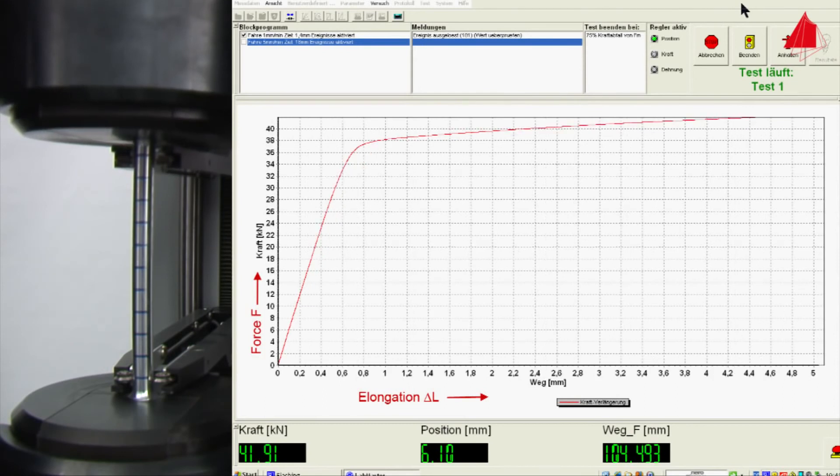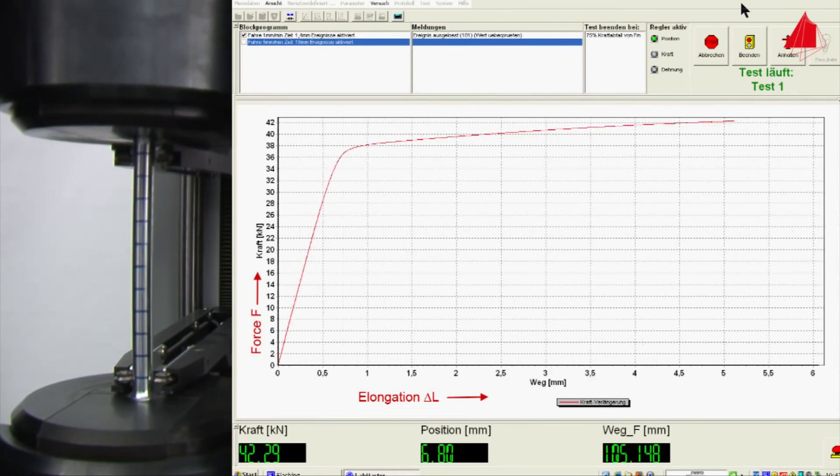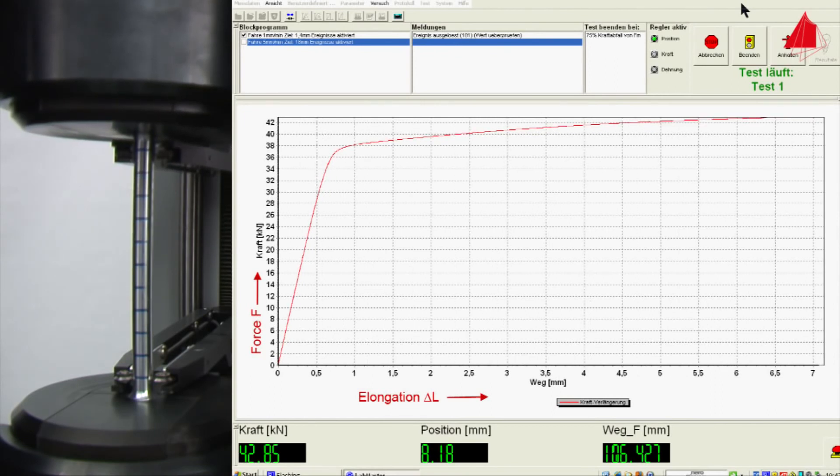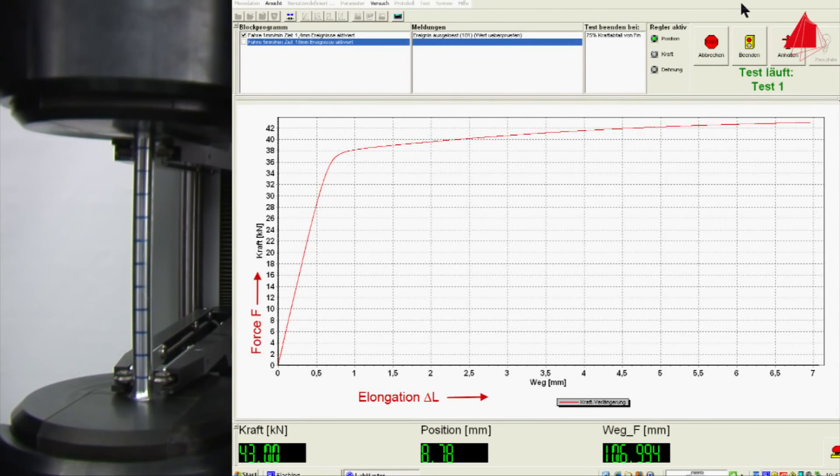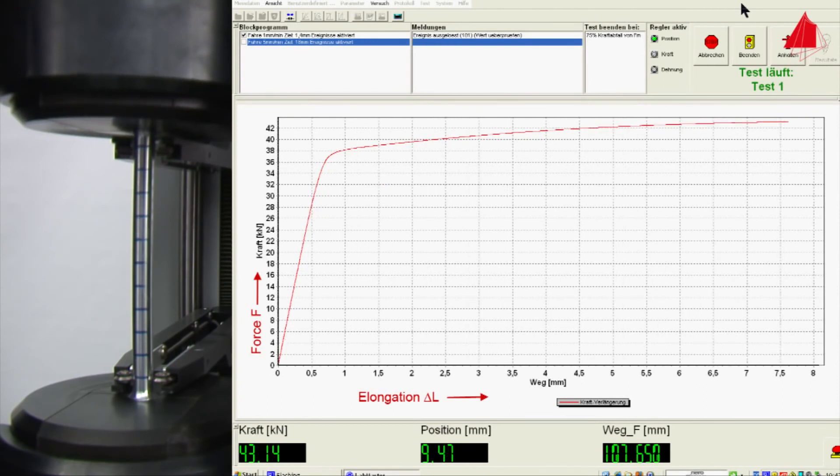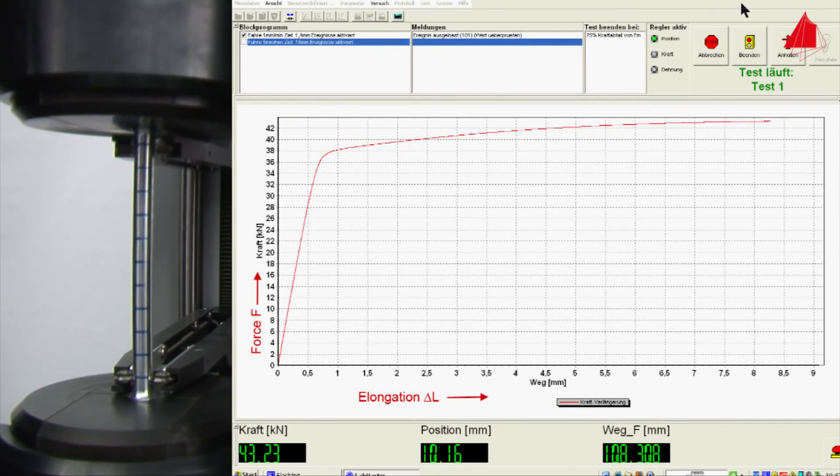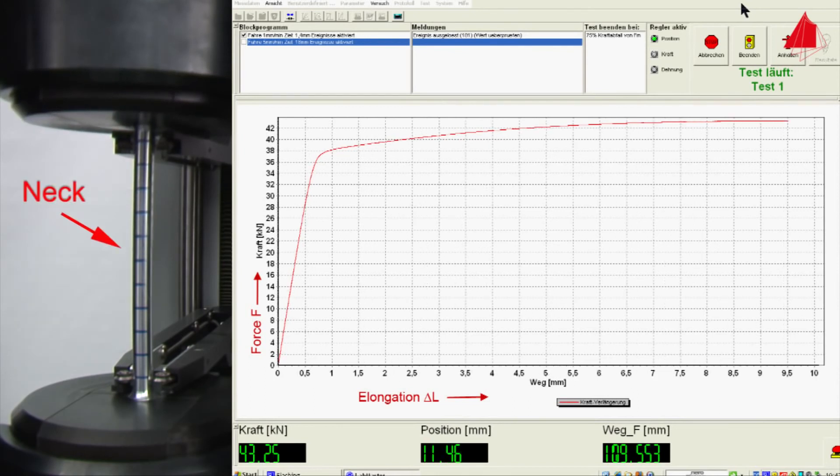In the further course of the tensile test, the force increases and the test piece again is strained uniformly along its length. At the point of maximum force, a neck develops and all subsequent plastic deformation is confined to this neck until fracture finally occurs there.